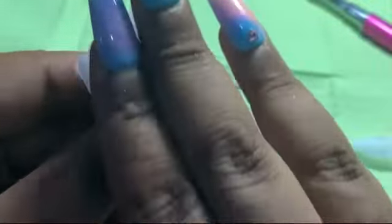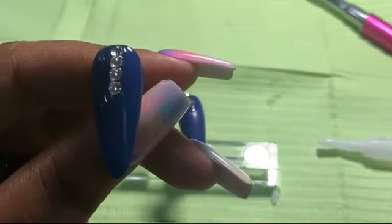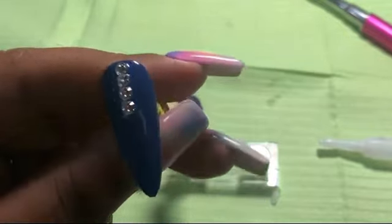Okay, so this is that first nail that we did in all builder gel. It cured. I took it out of the lamp, cleaning it with some alcohol. I'm gonna go over it in some top coat and pop that back into the lamp.